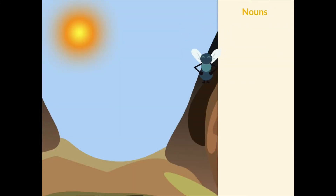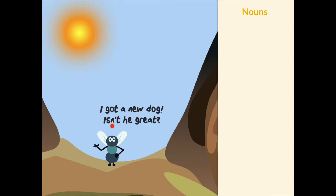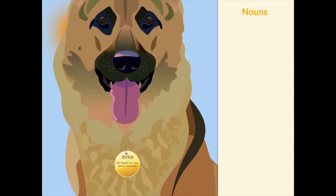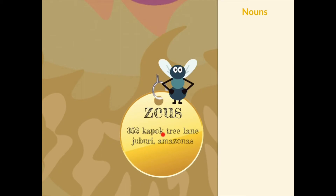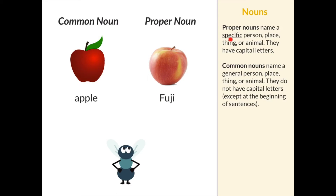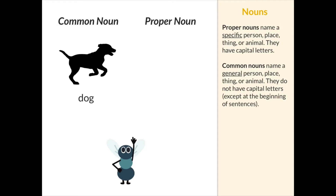Take this example from a video about common and proper nouns. Instead of just launching into definitions and examples, we give kids a reason to care first. They learn about JB's new dog, Zeus, and they get to see his enormous dog tag — which has some proper nouns with no capital letters. "What are proper nouns?" asks JB. Bingo! The stage is set for learning. We have subject matter appealing to a kid and a reason to learn the difference between a common and a proper noun.